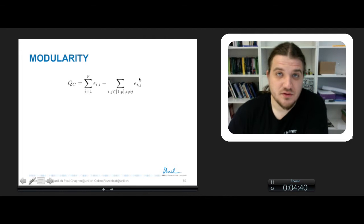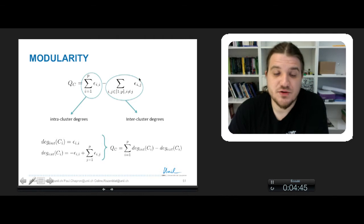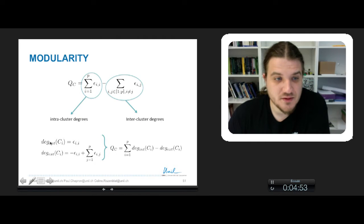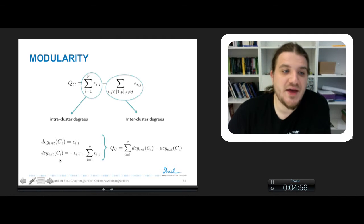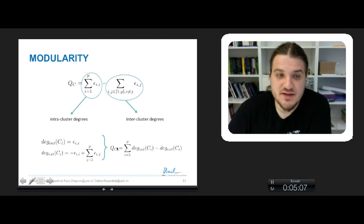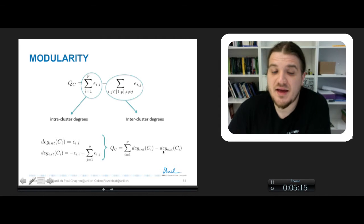There is an alternative notation or definition of modularity, for example using intra-cluster degrees or inter-cluster degrees, also called internal degree or external degree. So if you define the internal degree of a cluster C_i to be Epsilon(i, i), and the external degree of C_i to be the difference between the sum of Epsilon(i, j) for every j minus Epsilon(i, i), you can show that Q(C), the modularity, is also defined as the sum for every i from 1 to P of the internal degree of C_i minus the external degree of C_i.